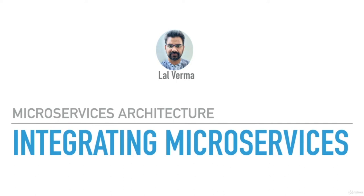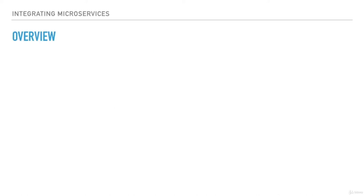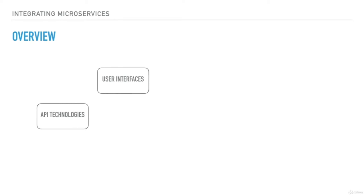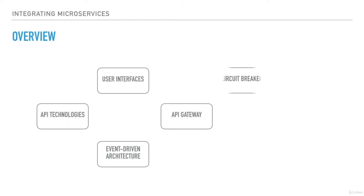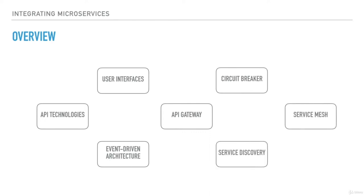In the integrating microservices section, we will understand how to deal with service interactions — how to expose APIs, how they can interact with each other and with external user interfaces. We will understand multiple interaction patterns including event-driven architecture, API Gateway, Circuit Breaker, Service Discovery, and Service Mesh. Let's begin with the API technologies.